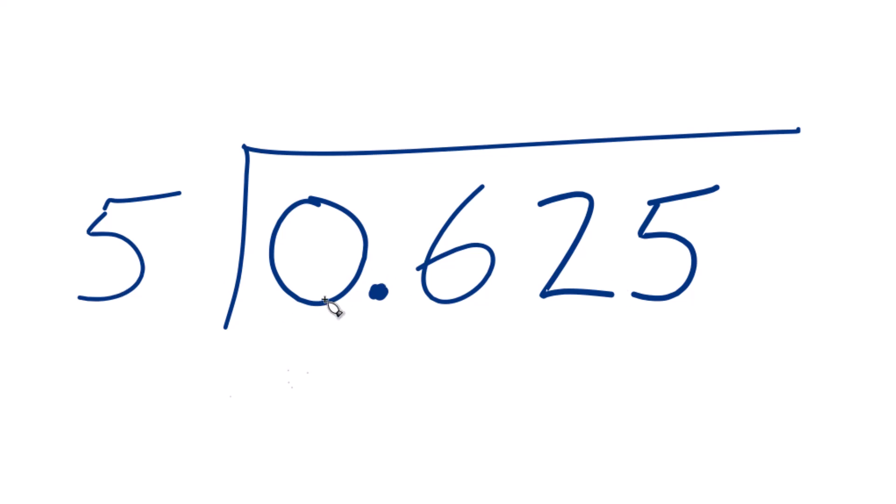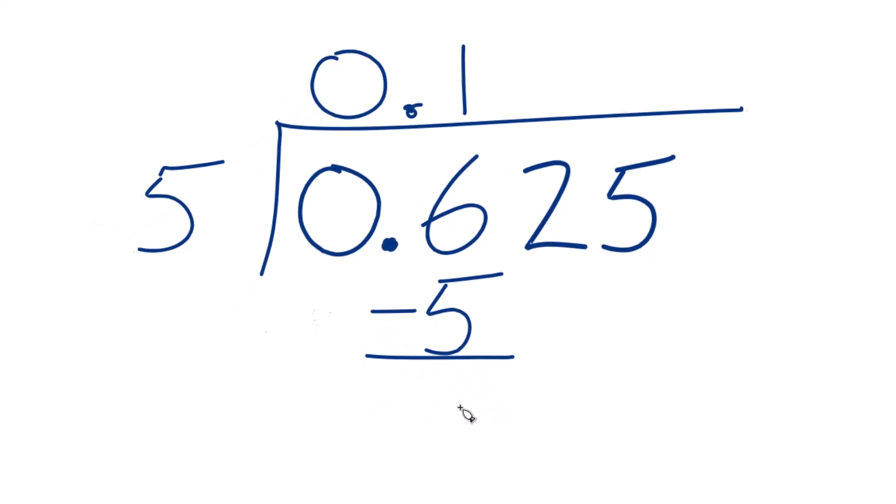So 5 does not go into 0, so I'm going to put a 0 up here and a decimal point. 5 does go into 6 because 1 times 5, that's 5. So when I subtract, I end up with 6 minus 5 is 1.